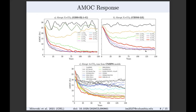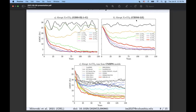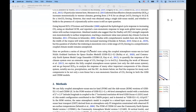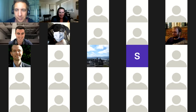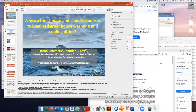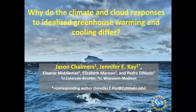Moving to the second talk by Jen Kay. We're going to continue along a similar line of thinking about how climate and cloud responses to idealized greenhouse warming and cooling differ. Looking at one model, CESM1, examining differences between a doubling and a halving of CO2, with particular focus on the cloud responses. We see about 20% more global warming than global cooling in CESM1. We ran experiments for 150 years following CMIP-6 protocols from CFMIP and nonlinMIP.